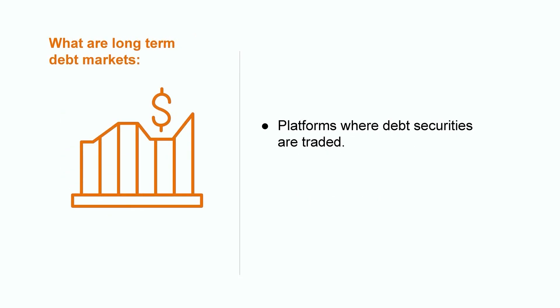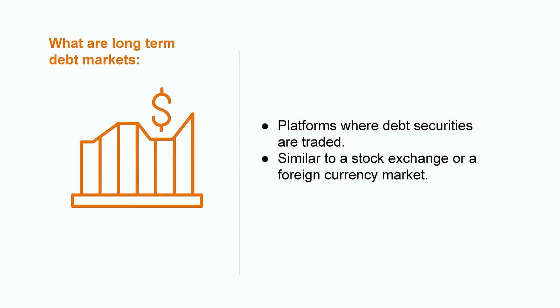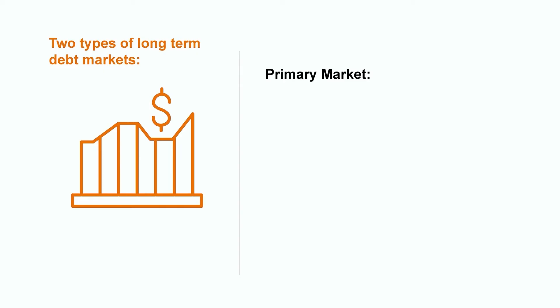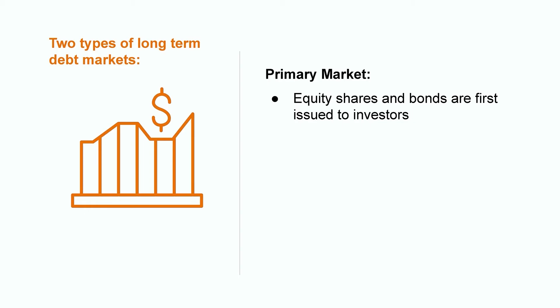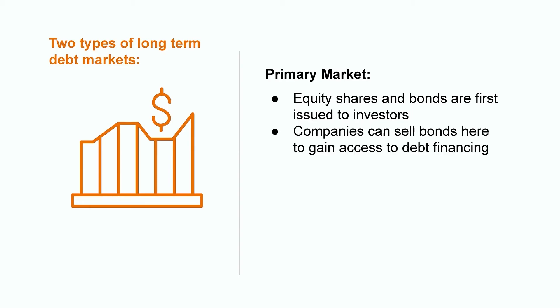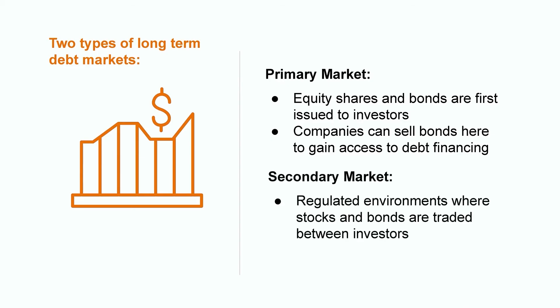So now that we're clear on the concept of long-term debt, let's talk about the debt markets. Long-term debt markets are the platforms where these debt securities are traded. Think of these platforms as places like the stock exchange or foreign currency market. A modern economy needs these types of long-term debt markets because they facilitate the transfer of money from those who have it to those who need it. There are two kinds of markets: primary markets and secondary markets. Primary markets are places where equity shares and bonds are first issued to investors. A company looking for access to debt financing could sell its bonds in these capital markets. Secondary markets are regulated environments where stocks and bonds are traded between investors after the fact, such as on the New York or London stock exchange.